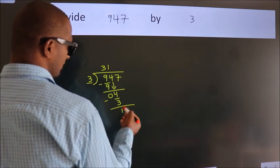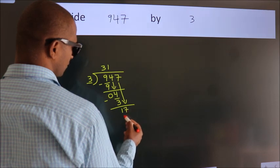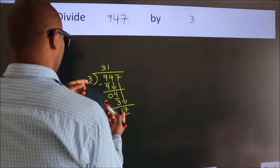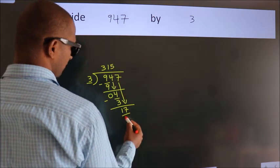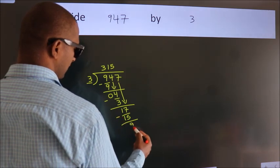After this, bring down the beside number. So 7 down. So 17. A number close to 17 in 3 table is 3 fives 15. Now we subtract. We get 2.